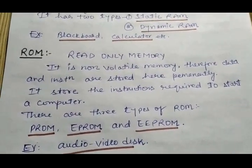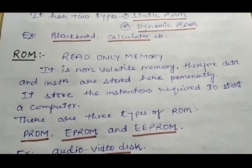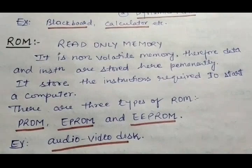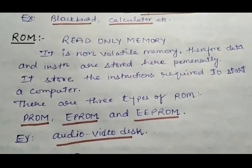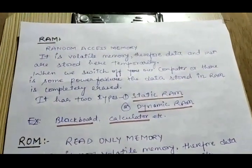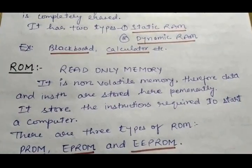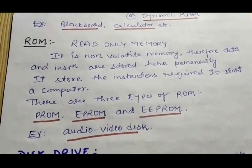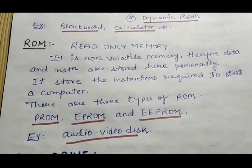ROM stands for Read Only Memory and is just the opposite of RAM — it is non-volatile memory. Data and instructions are stored here permanently. ROM stores the instructions required to start a computer. So RAM is volatile memory where data is not stored permanently, while ROM is non-volatile memory that stores instructions permanently. An example of ROM is an audio/video disc — once you burn audio or video onto a disc, you cannot rewrite or overwrite it again.